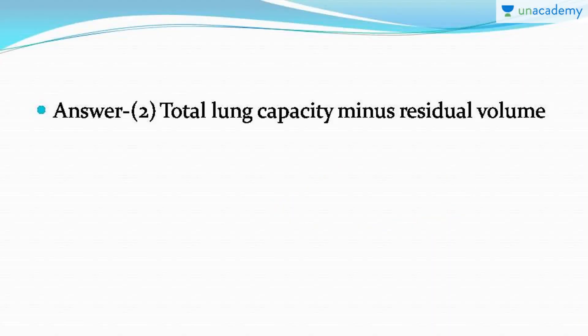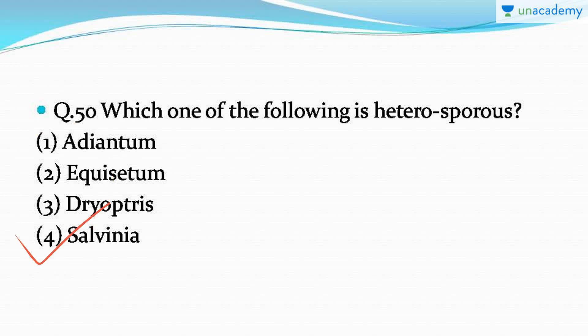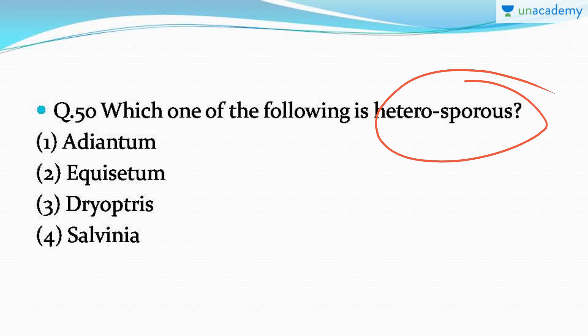Question number 50: which one of the following is heterosporous — meaning which option has spores of different types? This is a question where you have to remember the answer. The correct answer is option number four: Salvinia. Heterosporous means the male and female spores are of different types in structure, whereas homosporous organisms have spores that look the same.